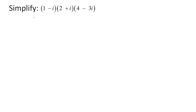Simplify: one complex number multiplied by another complex number multiplied by a third complex number — in other words, the product of three complex numbers. You cannot do this all at once. You can only multiply two complex numbers at a time.